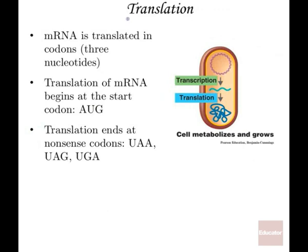Then we get translation. What is translation? Translation is assembling the amino acids into the protein based on the codes that were transcribed by the messenger RNA. Messenger RNA is translated into codons — those three nucleotides. The messenger RNA starts and then it stops based on that regulatory sequence. The protein in bacteria is used for cell metabolism and growth.